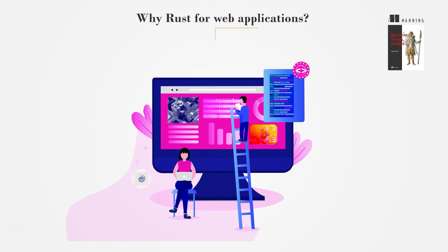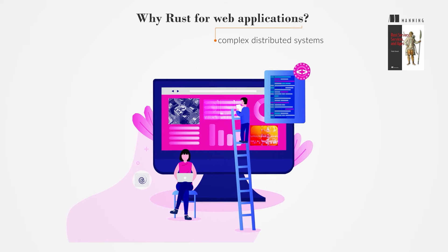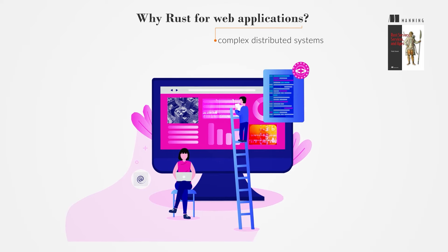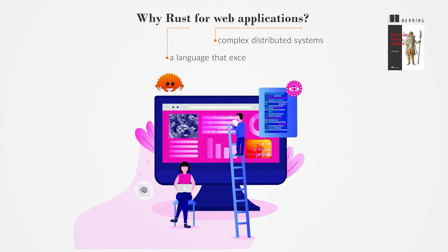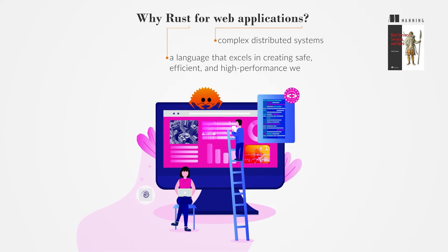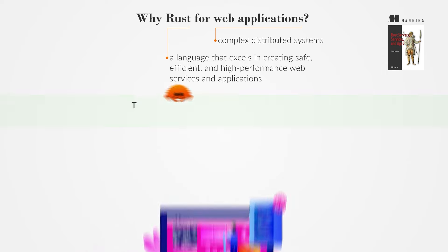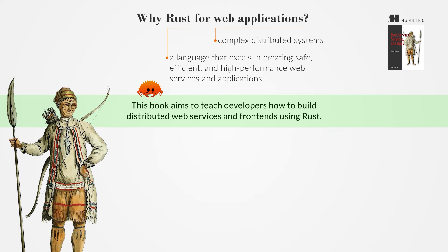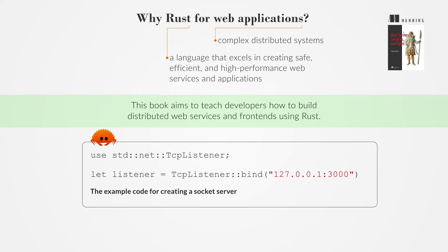Web applications are often complex distributed systems that are integral to our digital lives, offering interactive services over the Internet. Rust is a language that excels in creating safe, efficient, and high-performance web services and applications. This book aims to teach developers how to build distributed web services and front-ends using Rust, showcasing its capabilities through a practical example application.